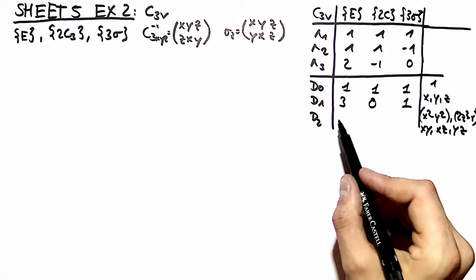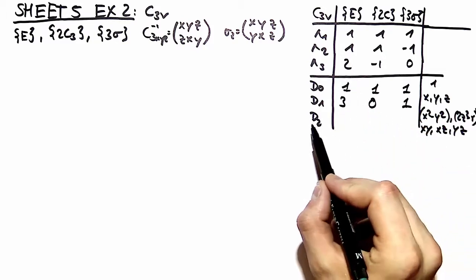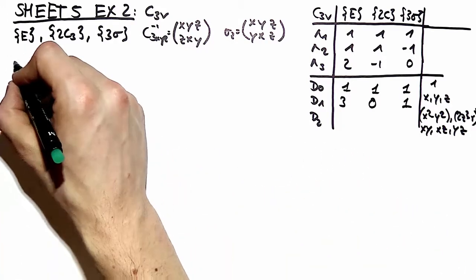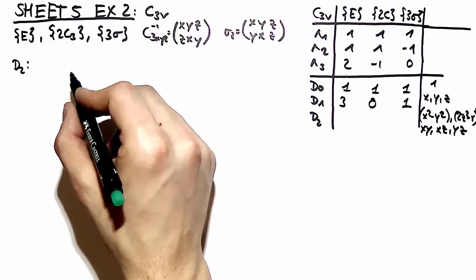The difficult part is now to derive the characters for the three different conjugacy classes for the d2 representations. And we do that by looking at how the basis vectors transform.